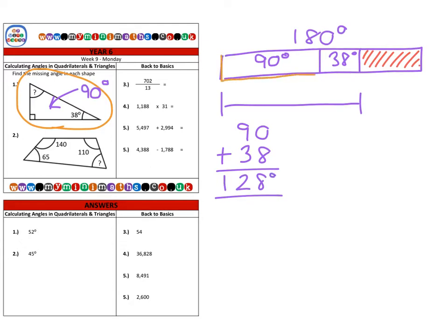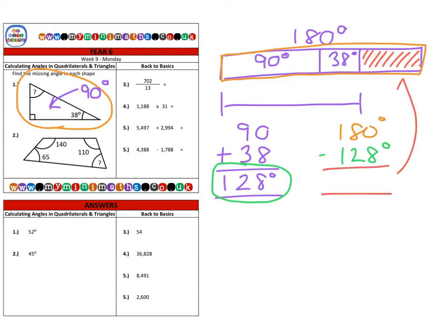We then take that full 180 degrees and we subtract the two given angles to give us our missing part here. Zero take away eight, we can't do, so we borrow from the eight, bring it over to make a ten. Ten minus eight is two. Seventy minus twenty is fifty, and of course 100 minus 100 leaves us with zero. So the missing angle is 52 degrees.